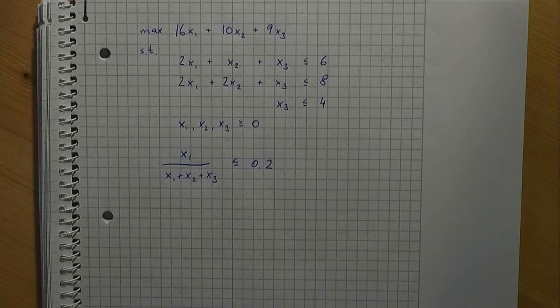How is the situation in our case? Well, the new constraint is not linear. Our challenge is to give an equivalent formulation of the constraint that is linear. We can derive such a formulation as follows. First, we multiply both sides of the constraint with the left-hand side's denominator.